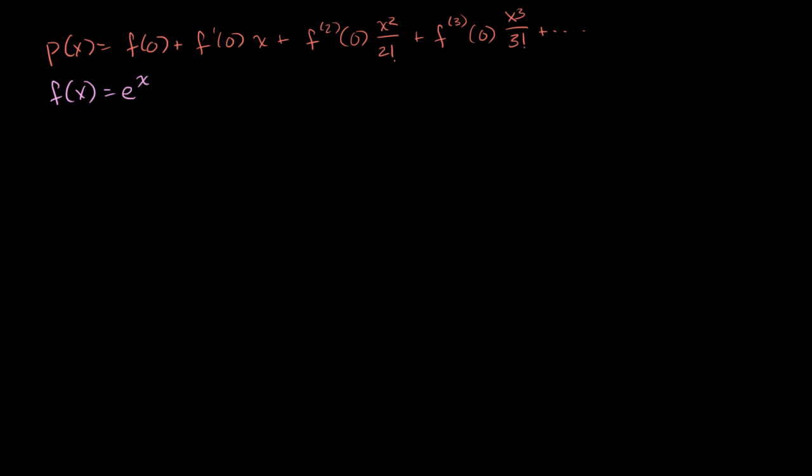f of x is equal to e to the x. And what makes this really simple is when you take the derivative, and this is frankly one of the amazing things about the number e, is that when you take the derivative of e to the x, you get e to the x.